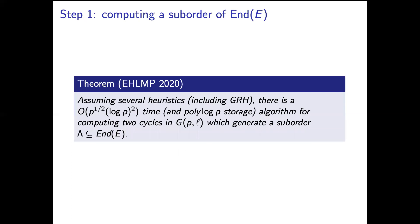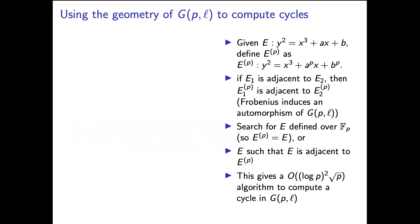So let me say a little bit about how we compute this suborder. The observation we're going to use which goes back to the work of Charles, Goren, and Lauter—they call this idea the generic attack on their hash function or some variant of this—is we're going to use the fact that if E_1 is adjacent to E_2 then the curve E_1^p is adjacent to E_2^p where E^p is the curve you get by raising the coefficients of E to the pth power. So this is the image of E under the Frobenius map.